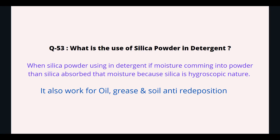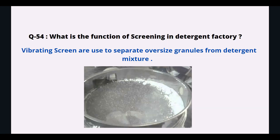What is the use of silica powder in detergent? When silica powder is used in detergent, if moisture comes into the powder, silica absorbs that moisture because silica is hygroscopic in nature. It also works for grease and soil entry prevention.